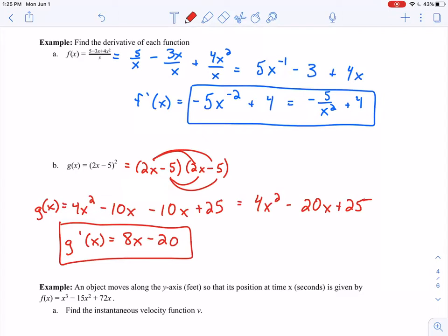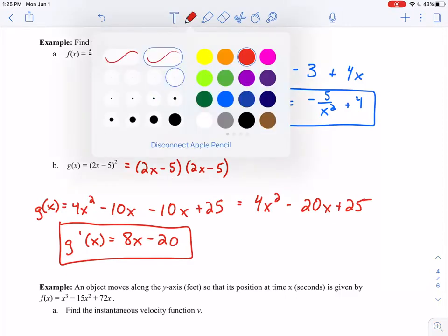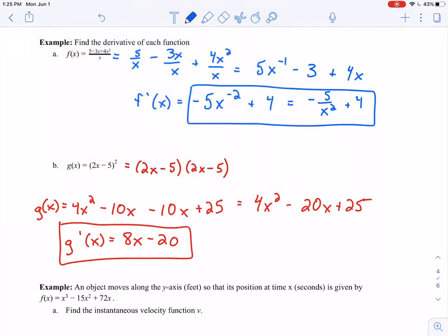And just to show for a second, I want to show that I wouldn't get the right answer. Let's pretend for a moment that I rewrote this as 2x minus 5 times 2x minus 5. What if I had just taken the derivative of this and then taken the derivative of this? If I could take the derivative of each factor separately, then I should end up with 8x minus 20.